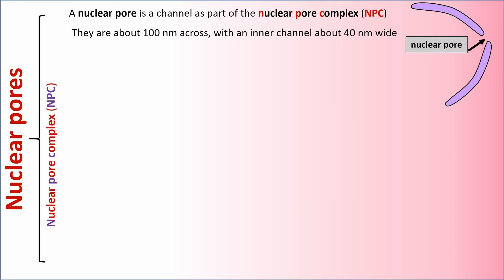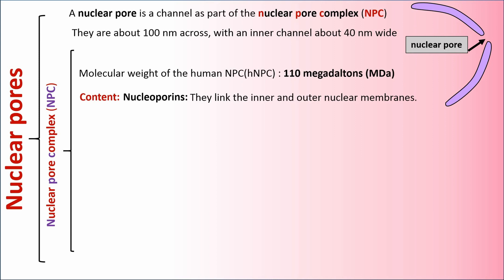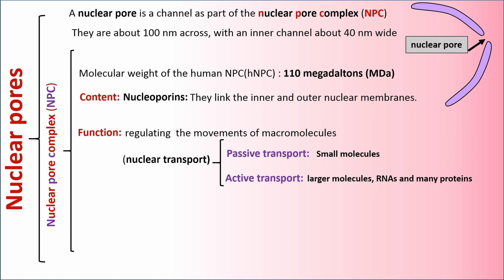Nuclear pore complex or NPC. Molecular weight of the human NPC or HNPC is 110 megadaltons. NPC has nuclear pore proteins. They link the inner and outer nuclear membranes. NPC function is regulating the movements of macromolecules or nuclear transport. Nuclear transport can be divided into passive transport for small molecules and active transport for larger molecules, RNAs and many proteins.